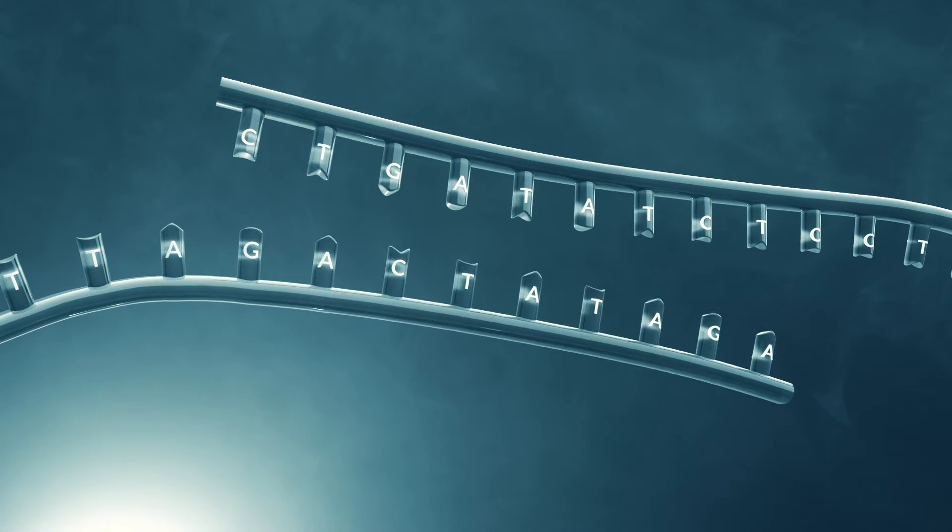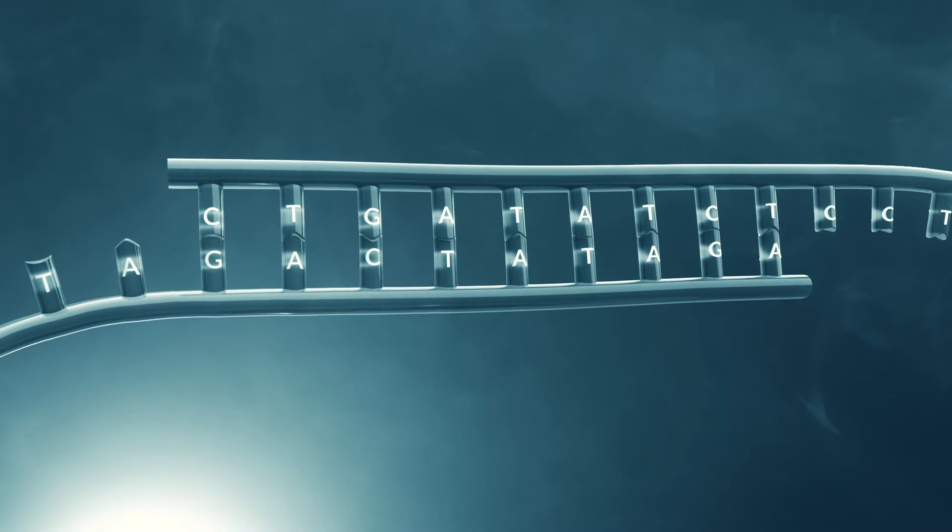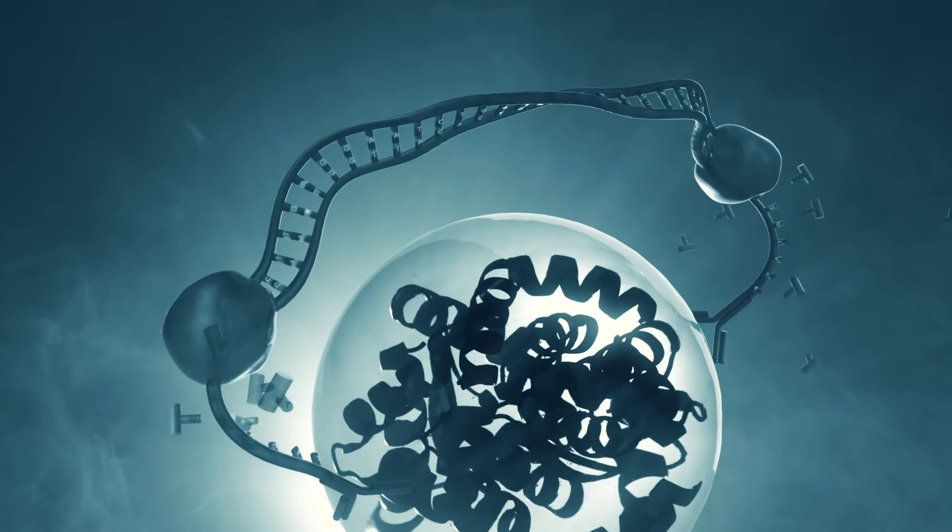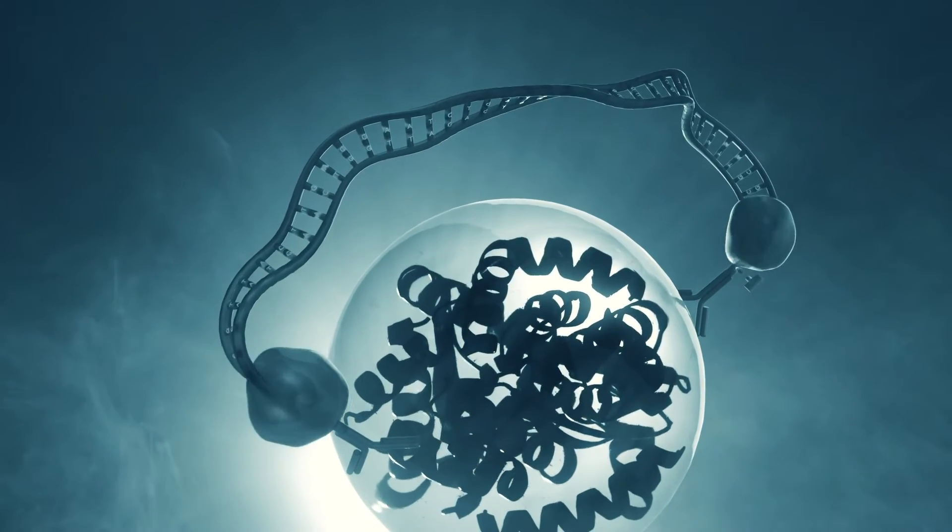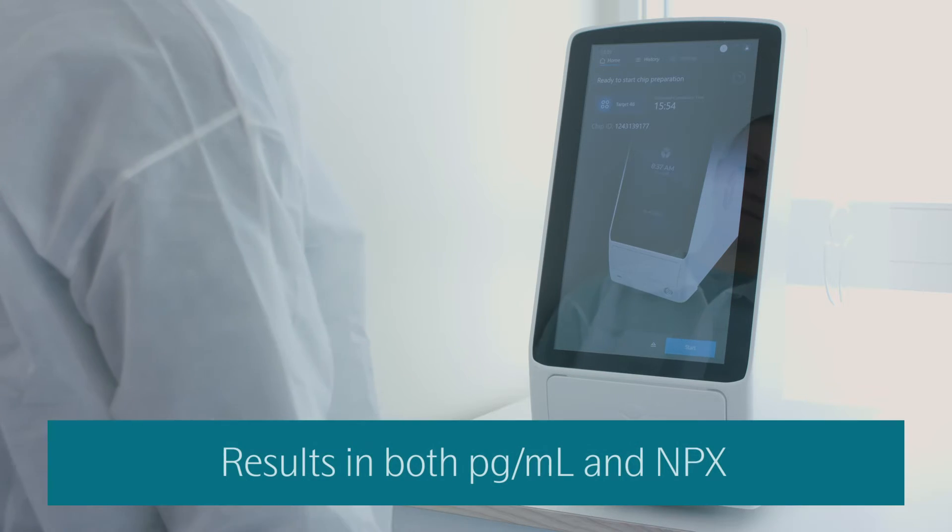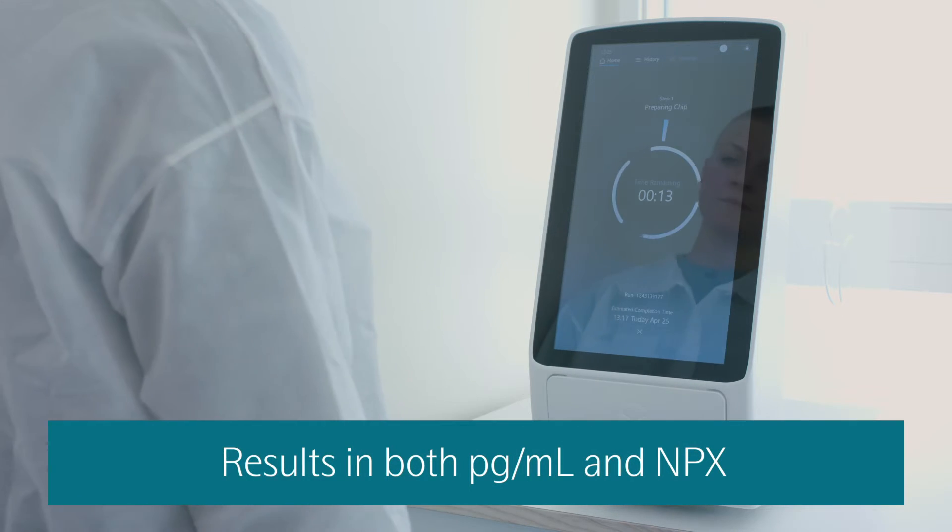Just as Olink Target 48, Olink Flex consumes only one microliter of sample to detect your selected proteins in 40 samples per kit. The results from Target 48 and Flex can be provided in standard concentration units as well as Normalized Protein Expression.